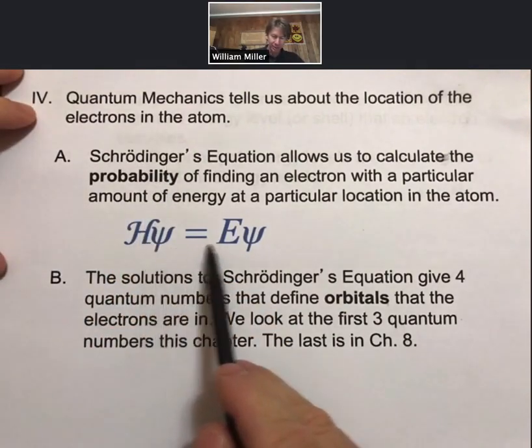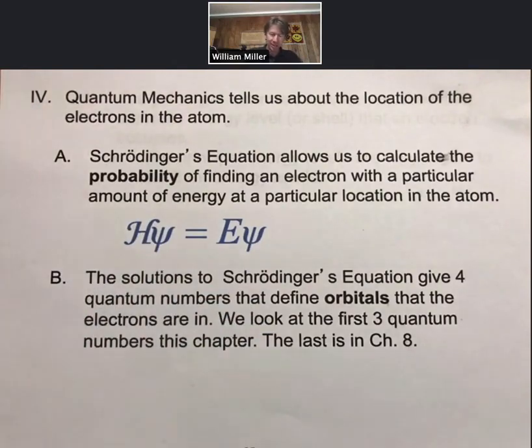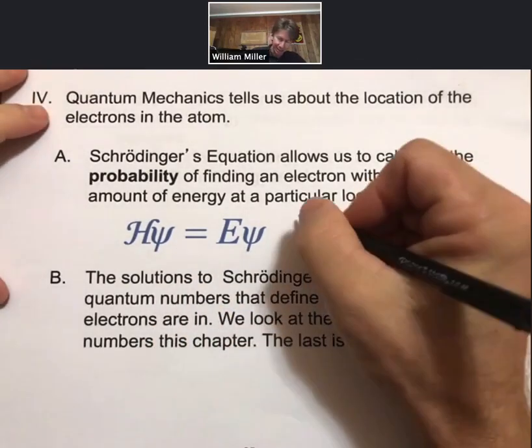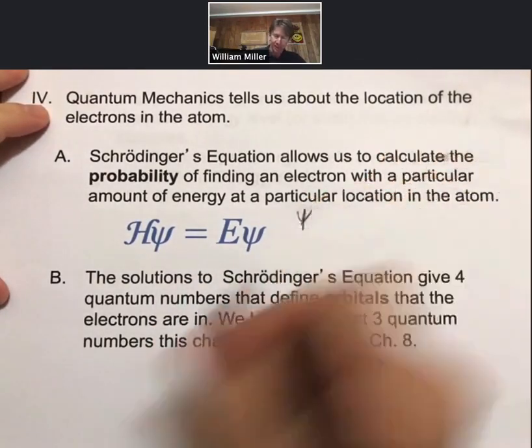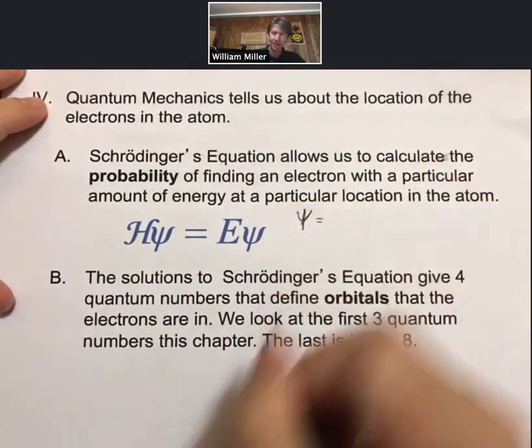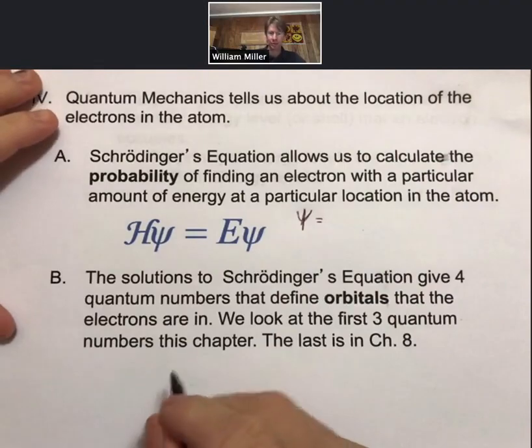Schrödinger's equation, which is this equation that I'm showing here, allows us to calculate the probability of finding an electron with a particular amount of energy at a particular location in the atom. And the solutions to the Schrödinger equation are called psi. And the psi symbol is here, and psi is called the electron probability wave function.